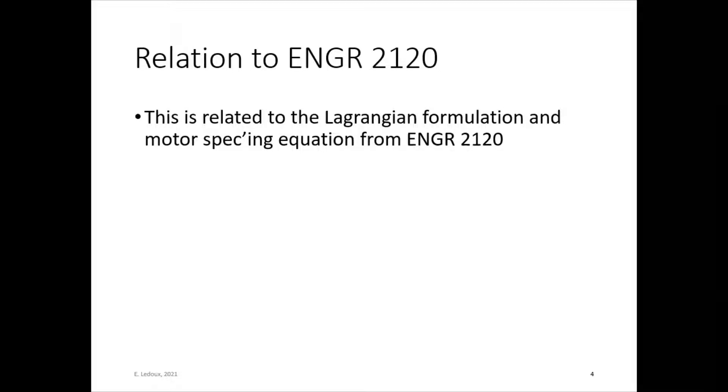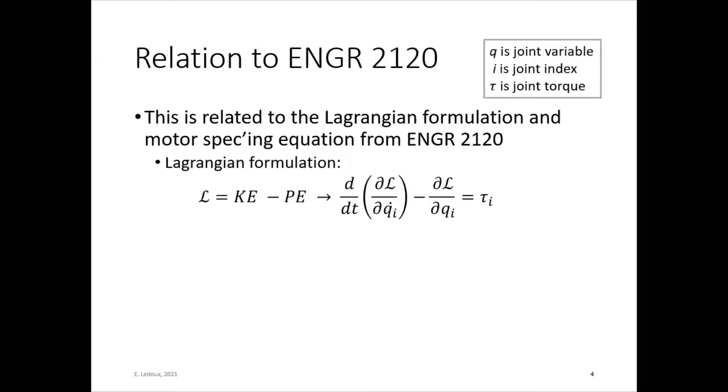Now if you took dynamics with me, then you will probably remember using the Lagrangian formulation to get equations of motion, as well as the motor specking equation. That is in a separate video. The Lagrangian formulation uses the Lagrange variable, which is that curly L. And it's a subtraction of energy, so kinetic minus potential energy, then you take some derivatives. And that results in equation for joint torque.